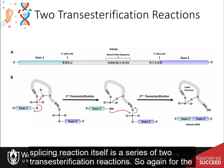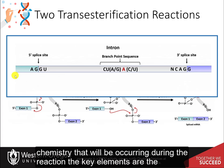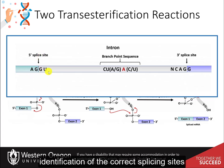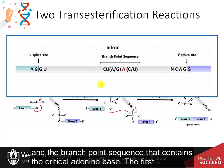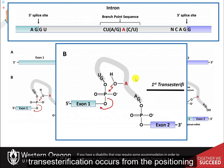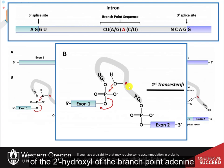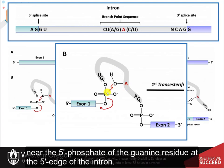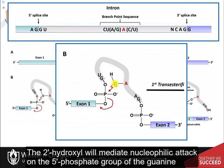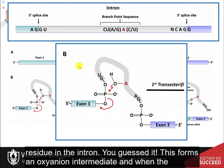The splicing reaction itself is a series of two transesterification reactions. The key elements are the identification of the correct splicing sites and the branch point sequence containing the critical adenine base. The first transesterification occurs from the positioning of the 2' hydroxyl of the branch point adenine near the five prime phosphate of the guanine residue at the five prime edge of the intron. The 2' hydroxyl will mediate nucleophilic attack on the five prime phosphate group of the guanine residue in the intron.